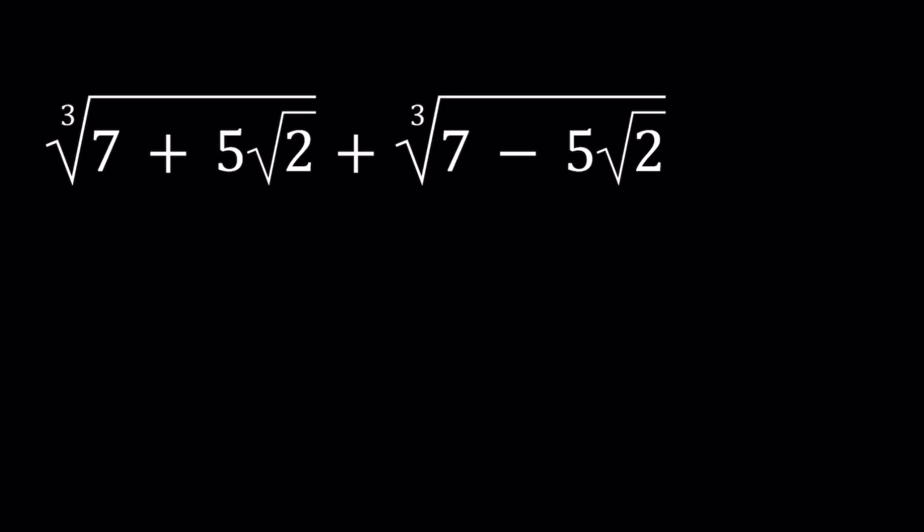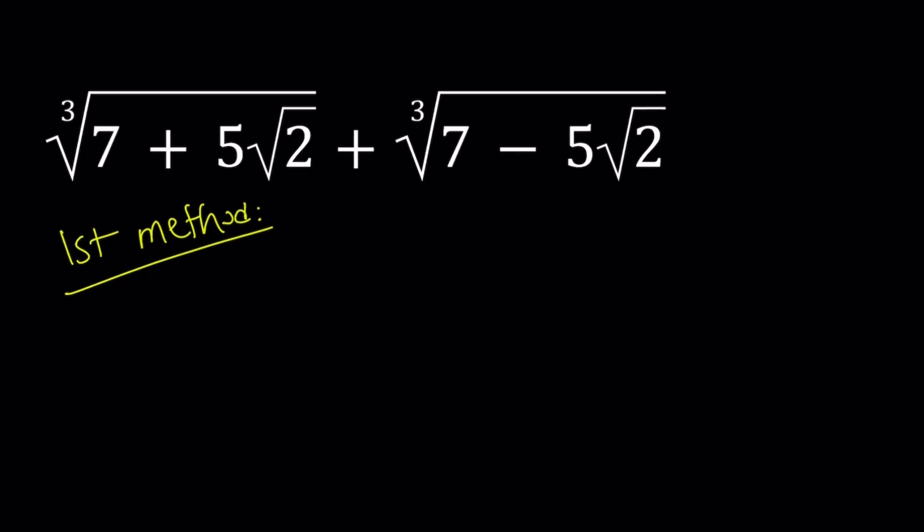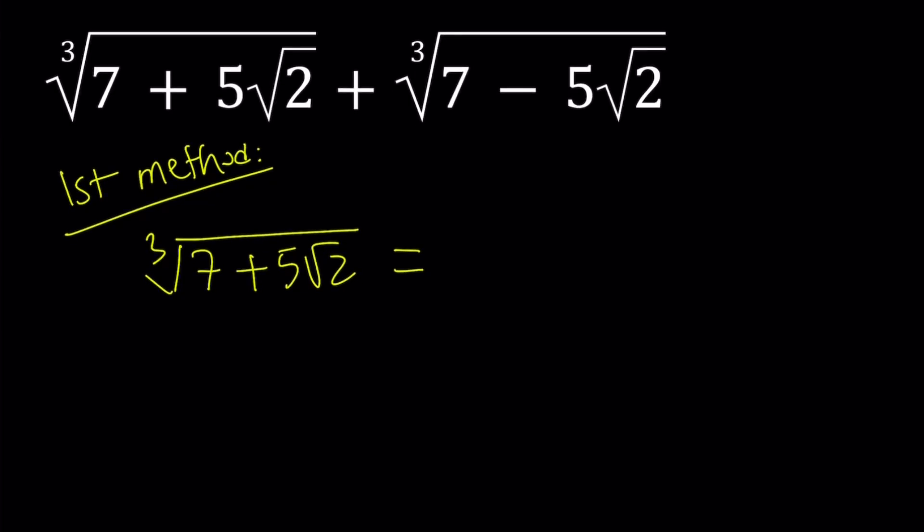I'll be presenting two methods and let's start with the first one. For my first method I am going to use the pieces separately. So first of all I have the cube root of 7 plus 5 root 2, and I'd like to simplify this so I'm just going to assume that this can be denested, meaning that I can write it as a plus b root 2 where a and b are rational numbers. This is not always the case obviously but we're just going to try to do it.